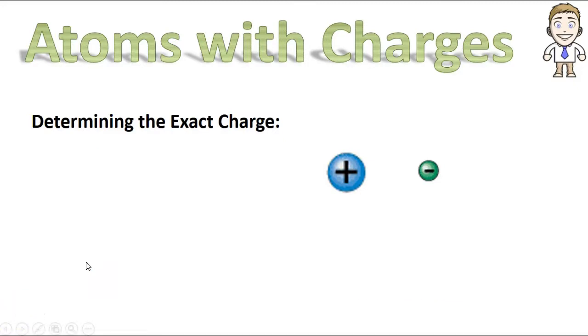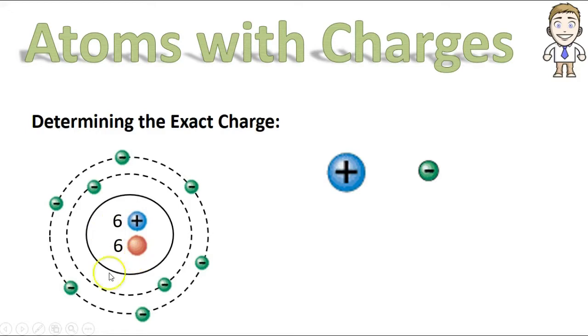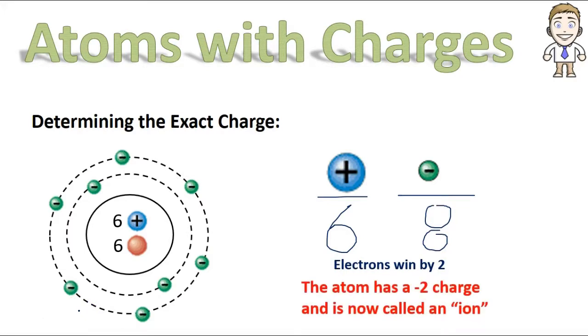If we take out the sports analogy and apply this same idea to an actual atom, we can walk through one of those too. I could give you this picture here and ask you to determine the charge of the atom. You should start taking score, positive team versus negative team. Positive team has a score of six. If you count the electrons in the rings, you'd see the negative team has a score of eight, which means the negative team, the electrons win by two. So, you should be able to say that this atom has a charge of negative two and is now called an ion.